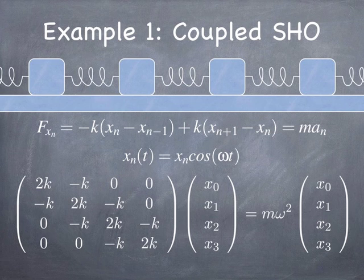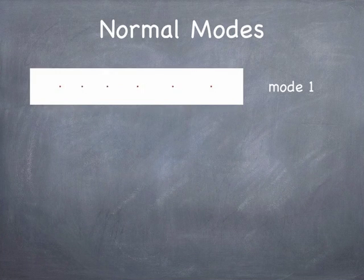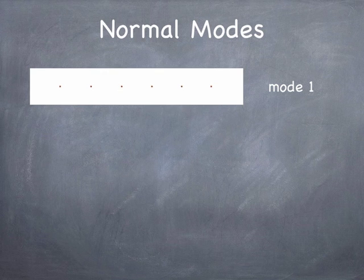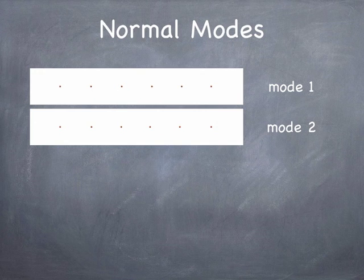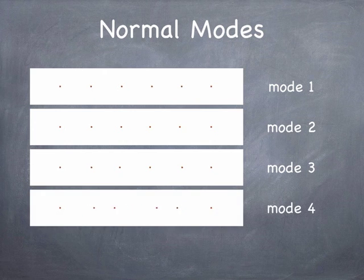One way to attack this is to propose that each mass executes some kind of simple harmonic motion. You can recast the force equations into a matrix form. The question is: what are the values of x0, x1, x2, and x3 that satisfy the requirement that they all behave harmonically? The answer is that there are certain normal modes. The lowest frequency mode is a sloshing mode where the two end masses are stationary and the middle masses slosh. There's a breathing mode where the right two masses go one way and the left two go another. And there's a mode where each neighbor goes opposite its nearest neighbor.